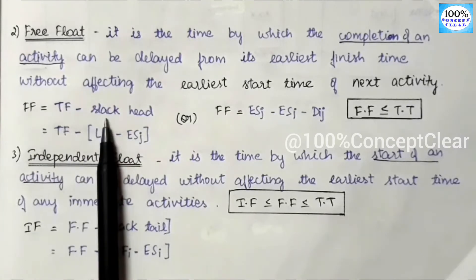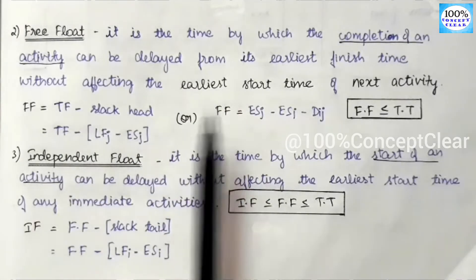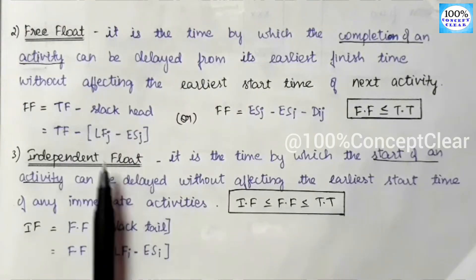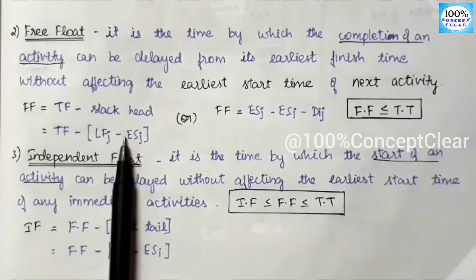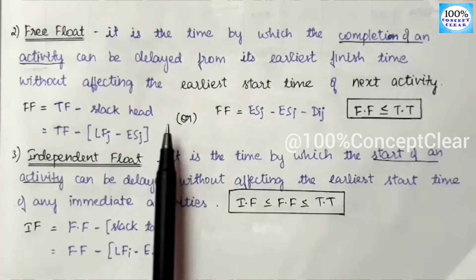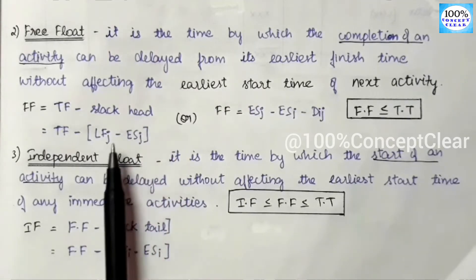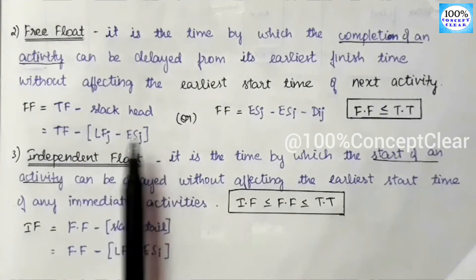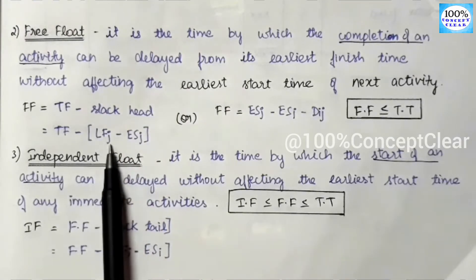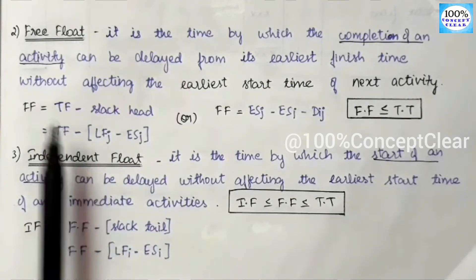The formula for Free Float is: Total Float minus Slack Head. Here, 'head' refers to the ending node, denoted as j. So Slack Head is: Late Finish of ending activity minus Early Start of ending activity. Therefore, Free Float = ES_j - ES_i - D_ij, i.e., Early Start of ending activity minus Early Start of starting activity minus duration of that activity.